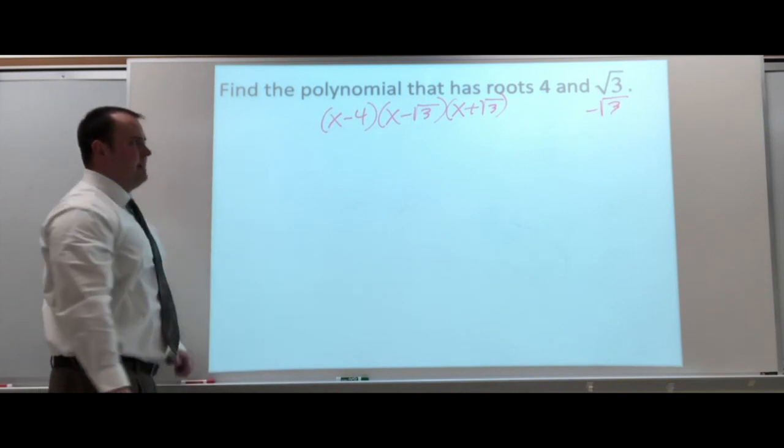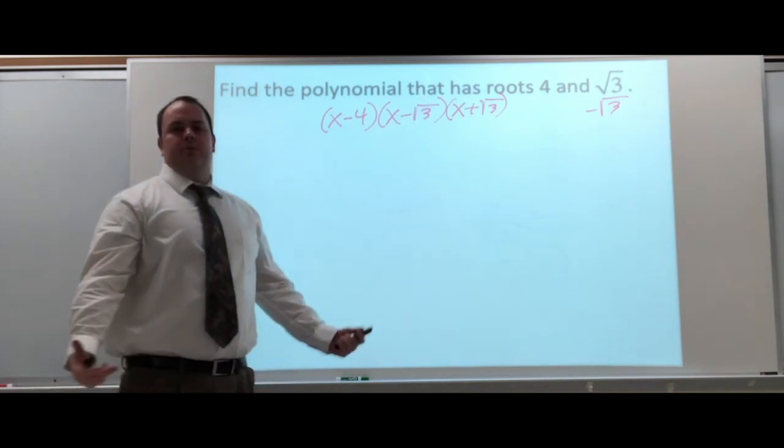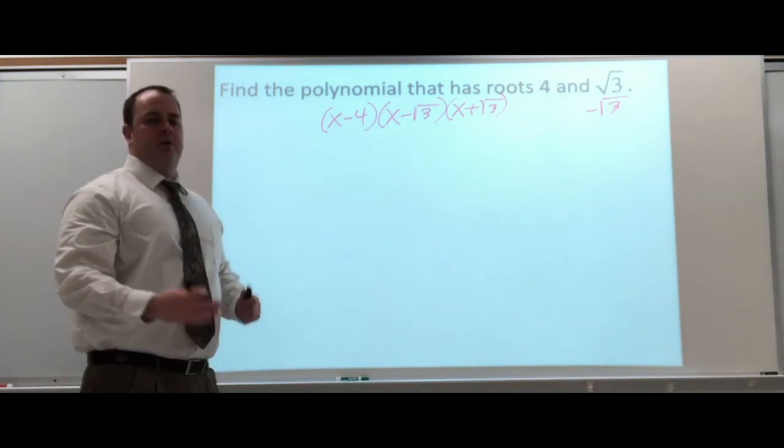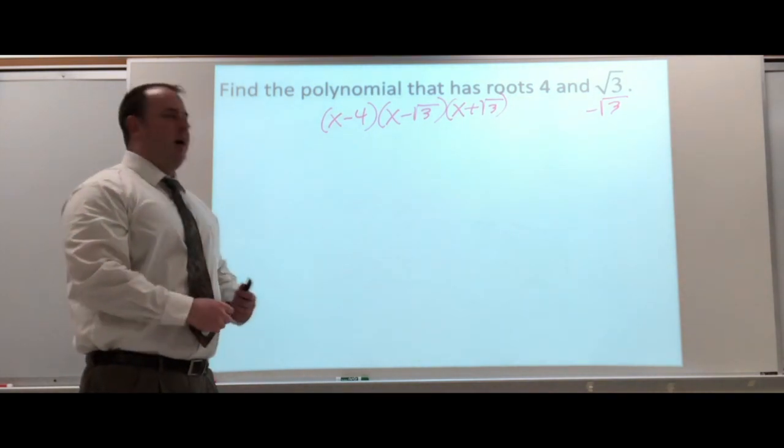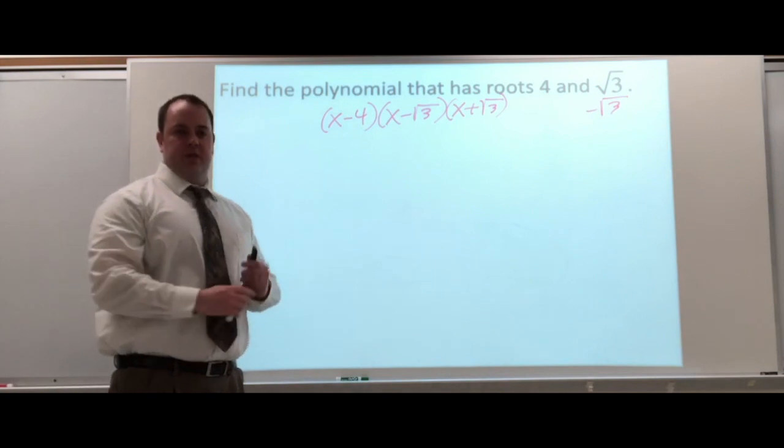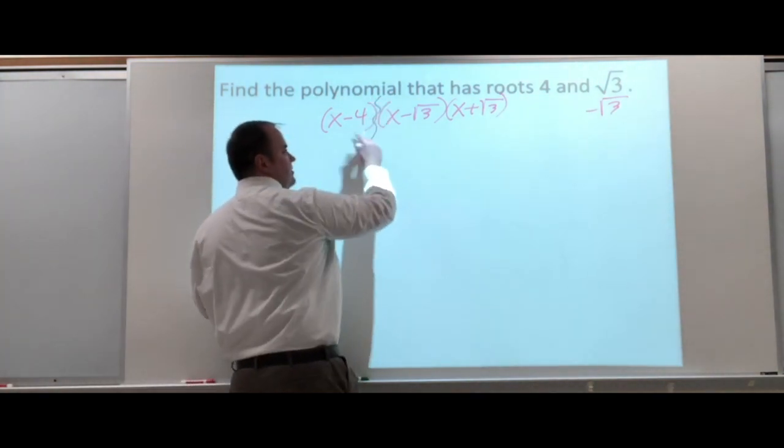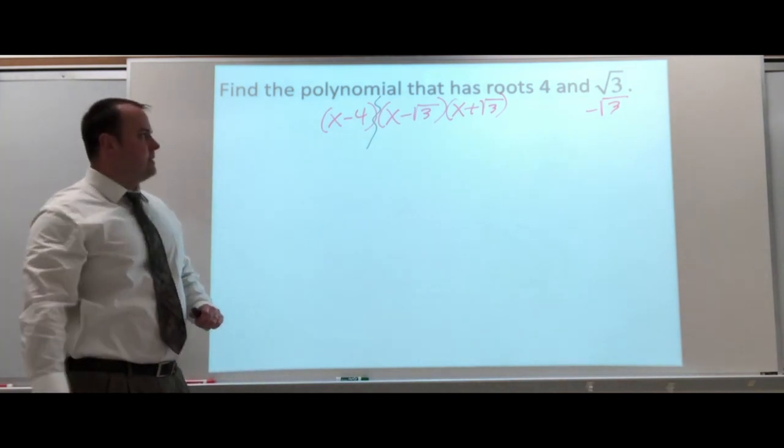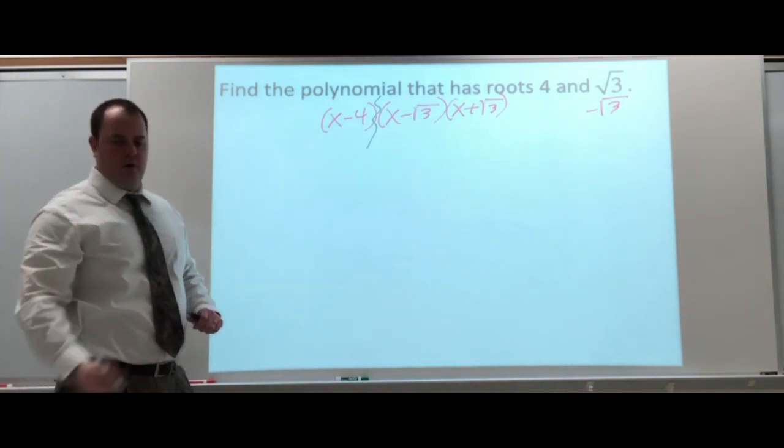Now, when we multiply these, you do have freedom. You can multiply in any direction or in any order you want. There's three binomials, so pick two of them and start multiplying. I'm going to suggest, start with the conjugates of each other. Instead of starting with the first two, that X minus 4 and X minus square root of 3, start with X minus square root of 3 and X plus square root of 3. And look what happens.